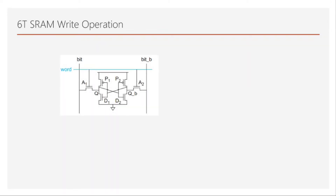As we assumed in the previous video, Q is 0. Now we will also assume Q is 0 again, but we want to write a 1 to the cell — meaning we want to make Q equal to 1. The only access we have is through the bit lines. If it's a multi-port SRAM cell we may have separate lines for read and write, but for a 6T SRAM cell we have only bit and bit-bar.